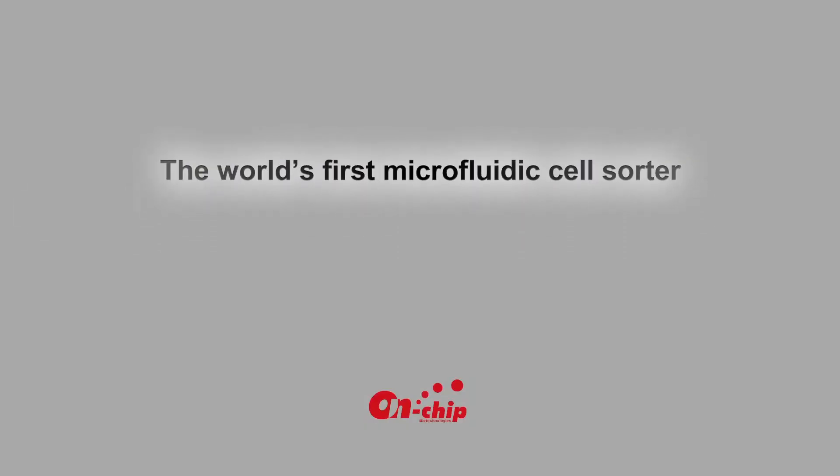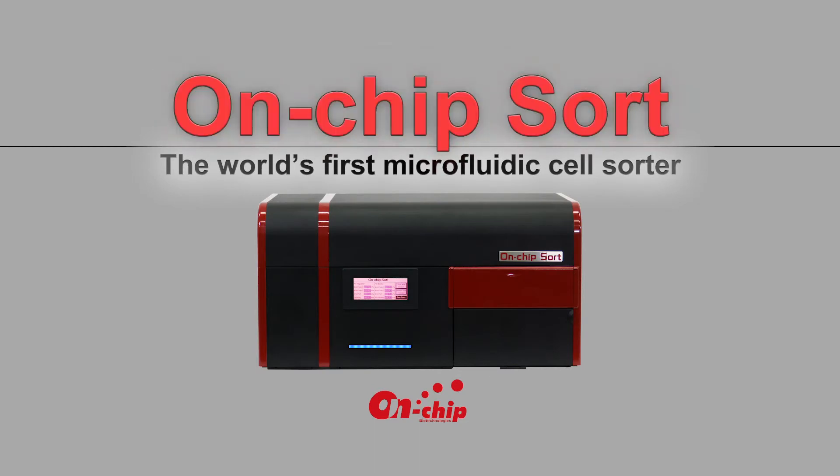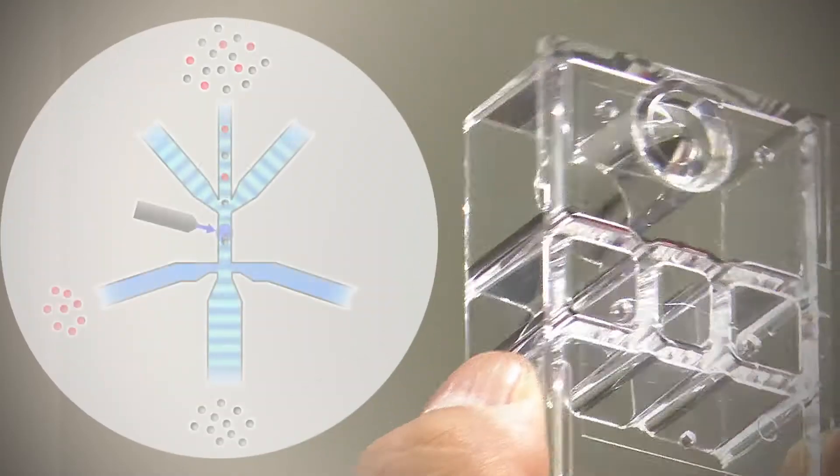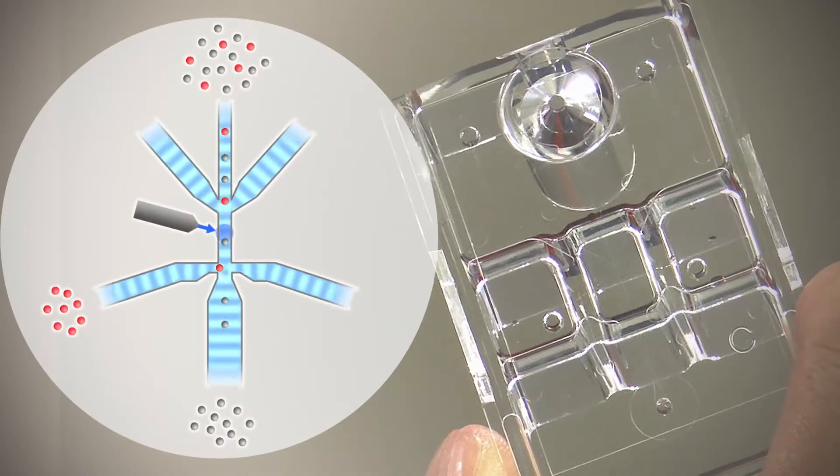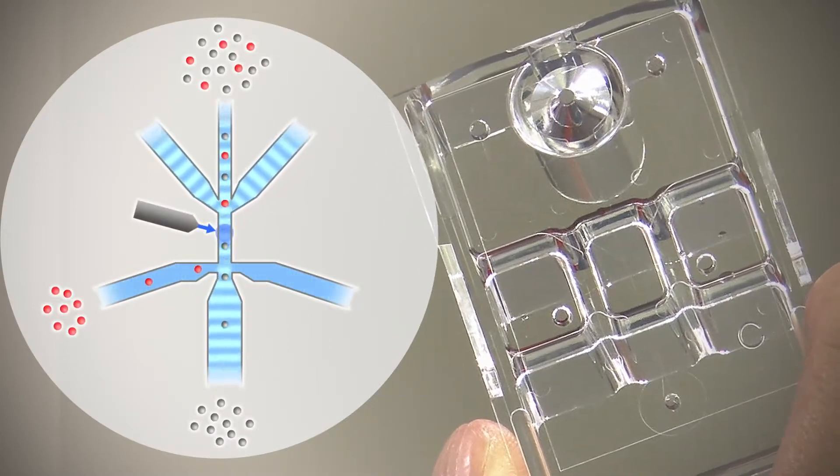OnChipSort, the world's first microfluidic cell sorter. OnChipSort enables contamination-free and damage-free sorting with the use of a disposable microfluidic chip.